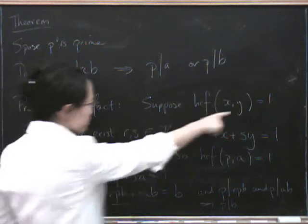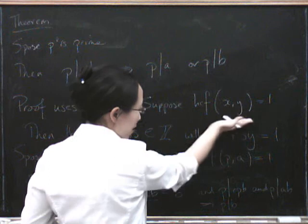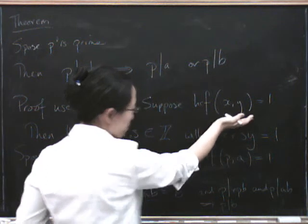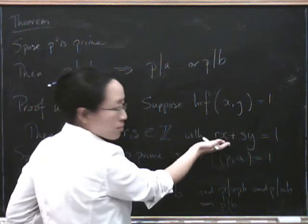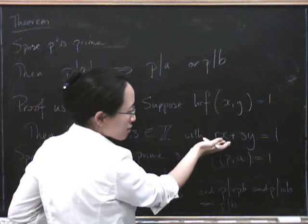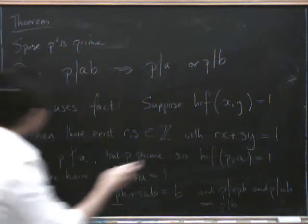So we use this fact, because if we've got a pair of numbers whose highest common factor is 1, we can definitely express it like this, rx plus sy equals 1. Okay, now back to the proof.